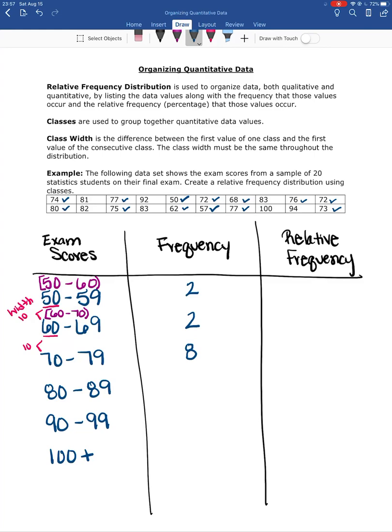All right, and then 80 to 89: one, two, three, four, five. 90 to 99: one, two. And then 100 or higher, we have one.